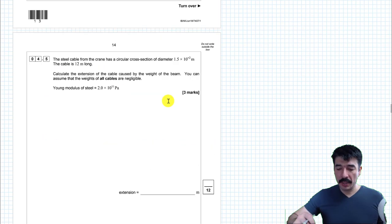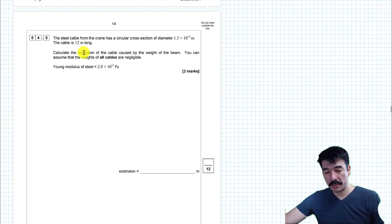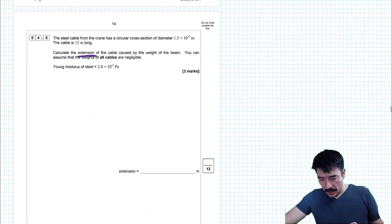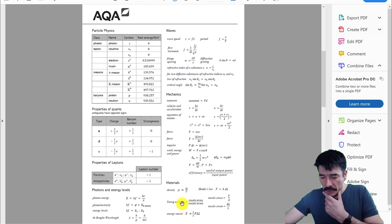Question four continues on the next page. The steel cable from the crane has a circular cross section of diameter 1.5 times 10 to the minus 2 meters. The cable is 12 meters long. Calculate the extension of the cable caused by the weight of the beam. You can assume that the weights of all the cables are negligible. Calculate the extension.